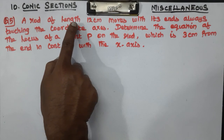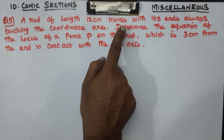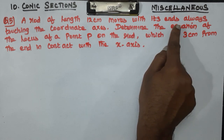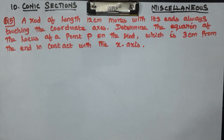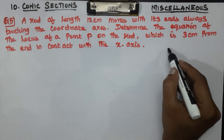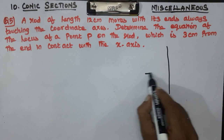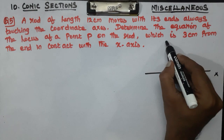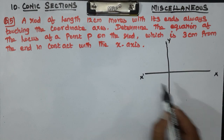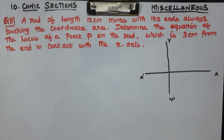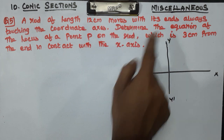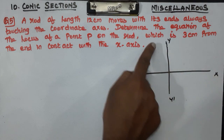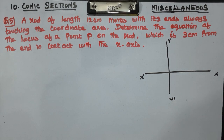A rod of length 12 cm moves with its ends always touching the coordinate axis. Now, x-axis, y-axis — we can draw a diagram. This is x, this is y. This is x-dash, this is y-dash. A rod of length 12 cm moves with its ends touching the x-coordinate axis and the y-coordinate axis.